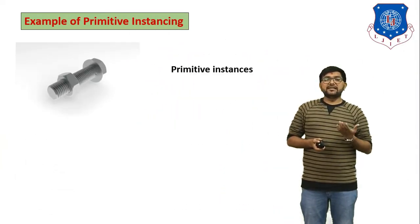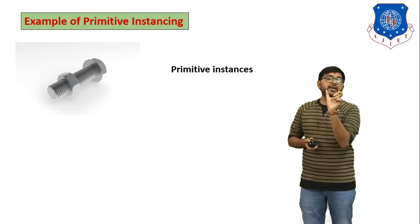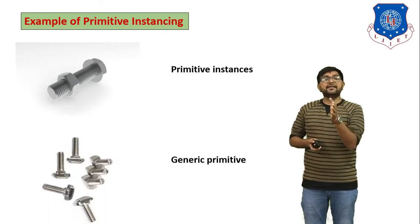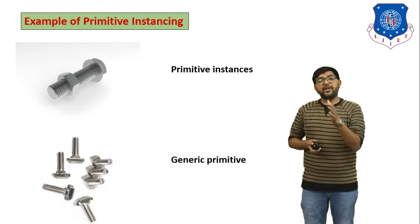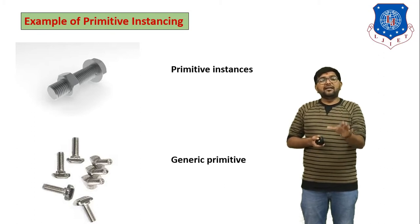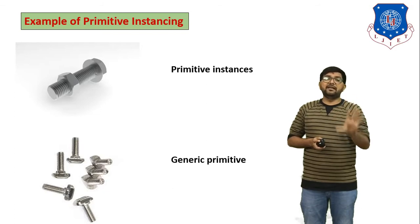In the example of primitive instancing, the first figure shows a primitive instance — one bolt with nuts. The second figure shows a generic primitive — a number of bolts with a number of nuts of various sizes. These two examples illustrate the difference between primitive instancing and generic primitives.